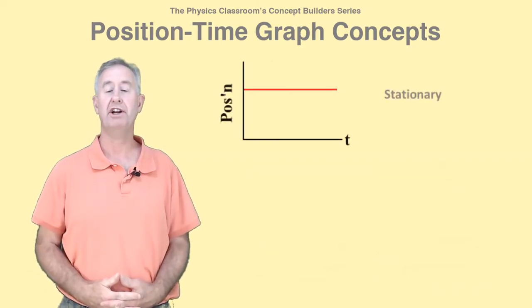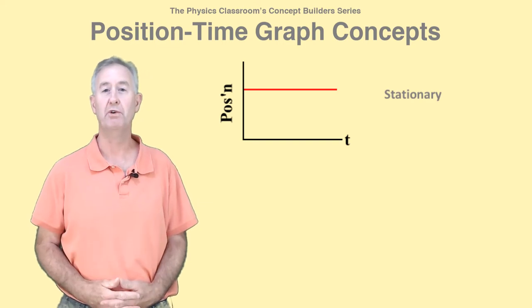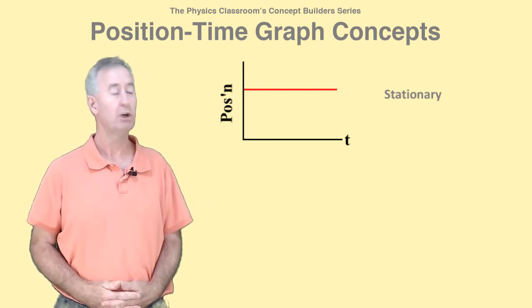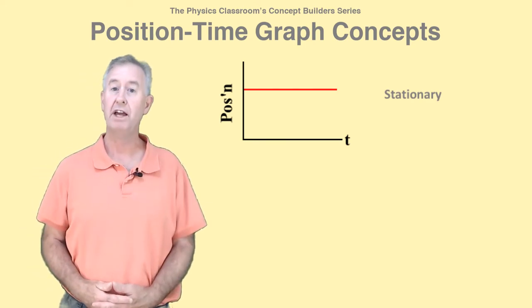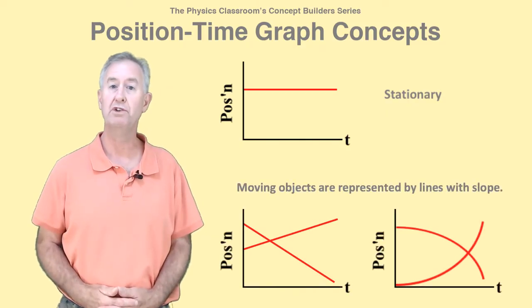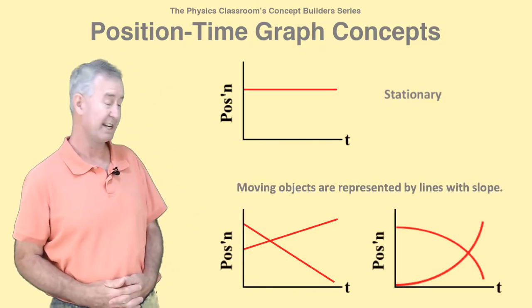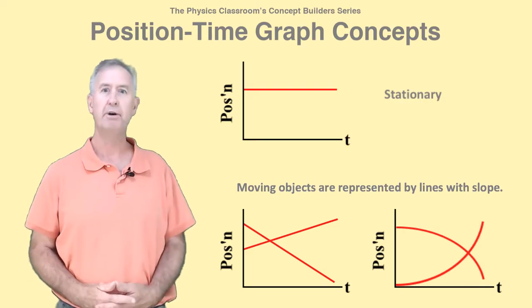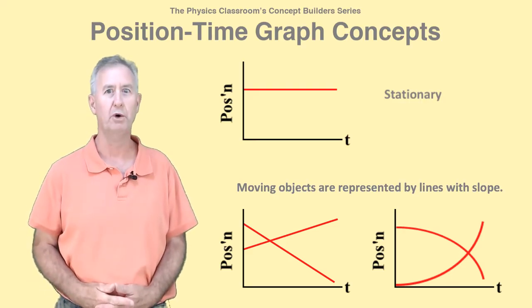Suppose that an object is stationary, keeping the same position over the course of time. The PT graph will be a horizontal line. But if the object is moving, there'll be some sort of slope to the line. It could be straight and diagonal, or even curved. But if it's moving, it won't be a horizontal line.